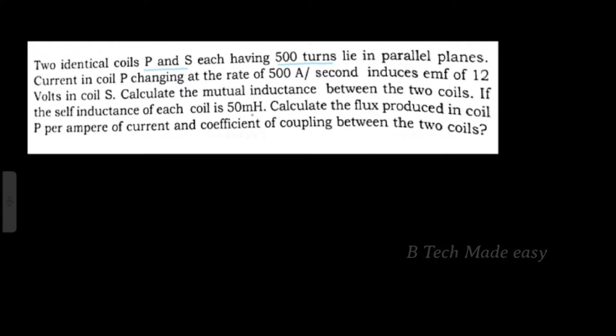If the self-inductance of each coil is 50 mH — that is, coil P and coil S both have self-inductance of 50 mH — calculate the flux produced in coil P per Ampere of current and the coefficient of coupling between these coils.